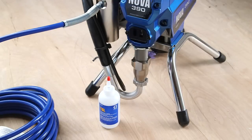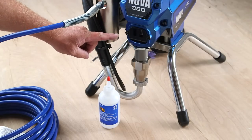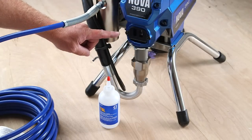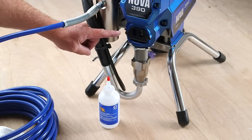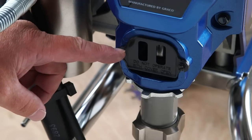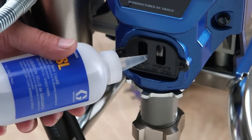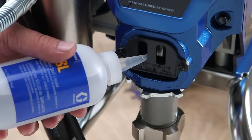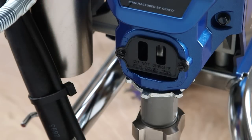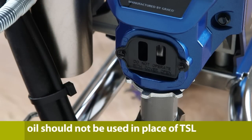To keep your airless sprayer in top condition, keep the pistons well lubricated. This wet cup is a reservoir that holds throat seal liquid or TSL. Graco TSL is specifically formulated to prevent paint from drying on the displacement rod. It's also clear and won't impact the performance or finish of the coating. Oil should not be used in place of TSL.